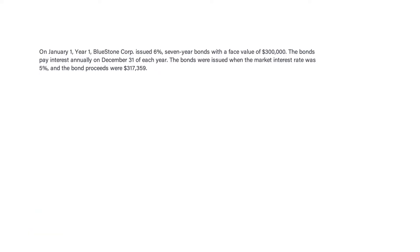Now let's take a look at a full example. On January 1, Year 1, Bluestone Corp issued 6% seven-year bonds — this is the stated rate used for the interest payments — with a face value of $300,000. So we know that each year we're going to pay 6% of $300,000, which is $18,000 of cash payments each year. The bonds pay interest annually on December 31st. The bonds were issued when the market interest rate was 5%, and the bond proceeds were $317,359.